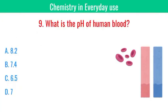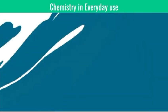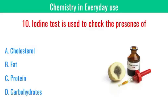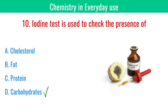What is the pH of human blood? The correct answer is 7.4. The iodine test is used to check the presence of? The correct answer is carbohydrates.